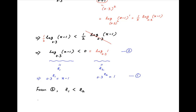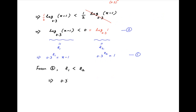It therefore follows that 0.3 raised to the power z1 is greater than 0.3 raised to the power z2, and the sign of the inequality has reversed because 0.3 is a number less than 1. Now from equation 1, the left hand side is equal to x minus 1 and the right hand side is equal to 1.